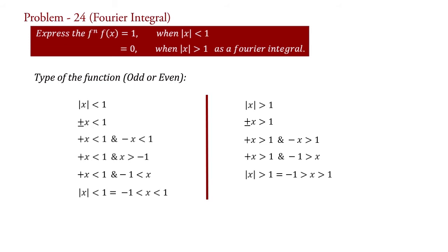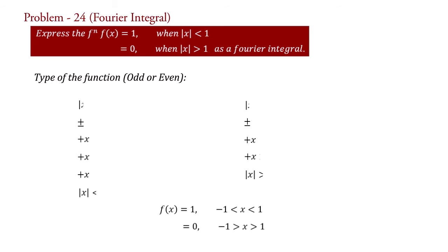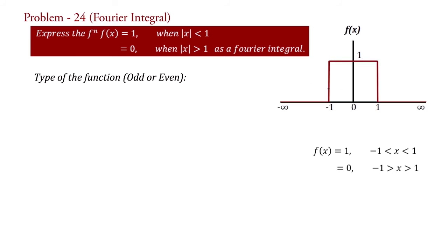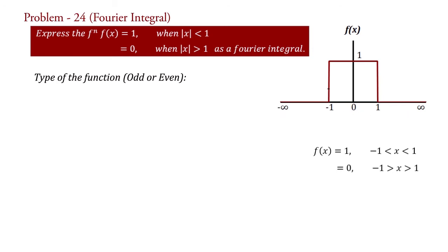Therefore, we can write our function as f(x) = 1 for −1 < x < 1, and f(x) = 0 for x < −1 or x > 1. If we draw the curve of the function, the function has value 1 in the interval −1 to 1, and outside this interval the function has value 0. This shows that the function is even because it is symmetric with respect to the vertical axis.